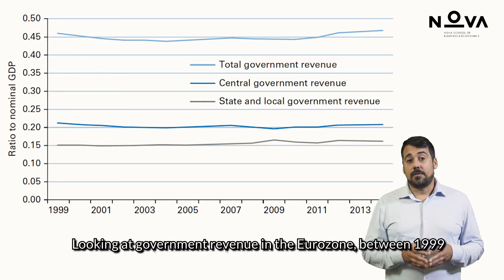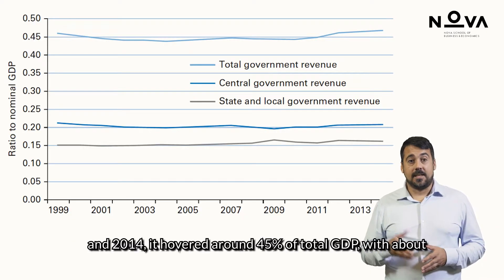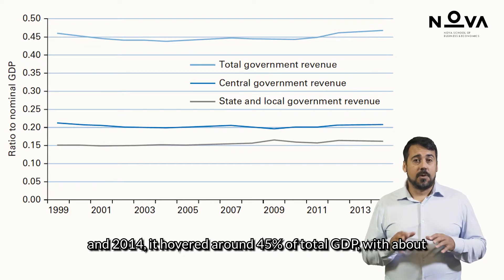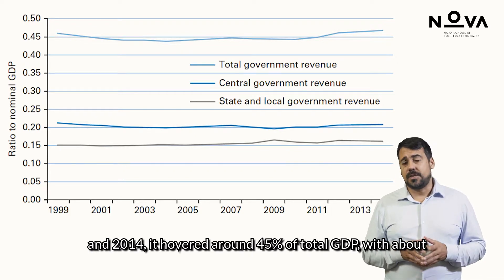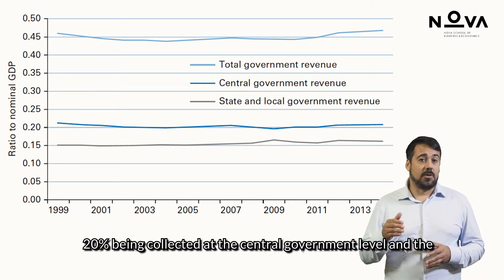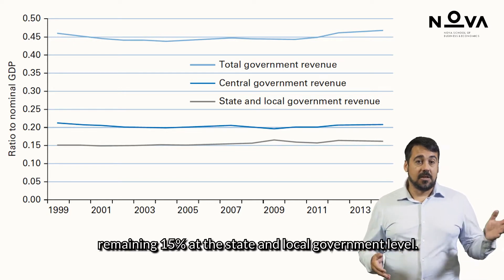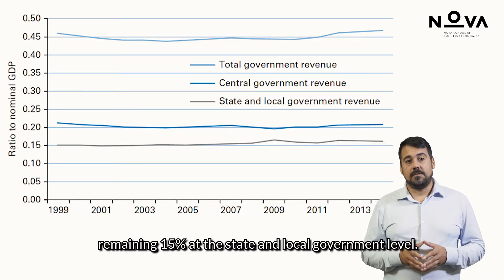Looking at government revenue in the Eurozone between 1999 and 2014, it hovered around 45% of total GDP, with about 20% being collected at the central government level and the remaining 50% at the state and local government level.